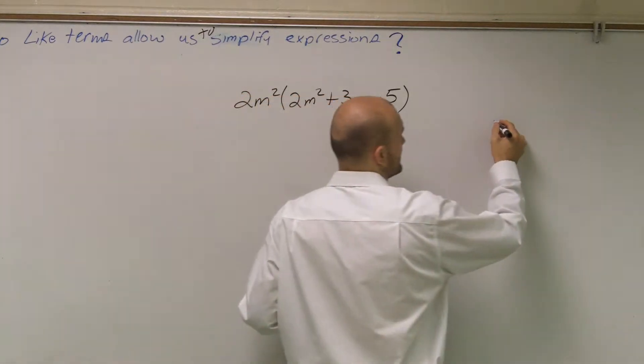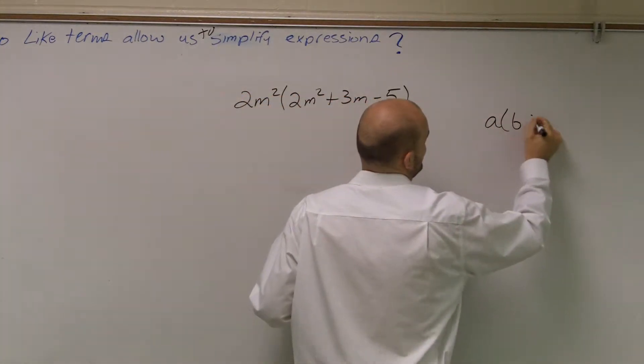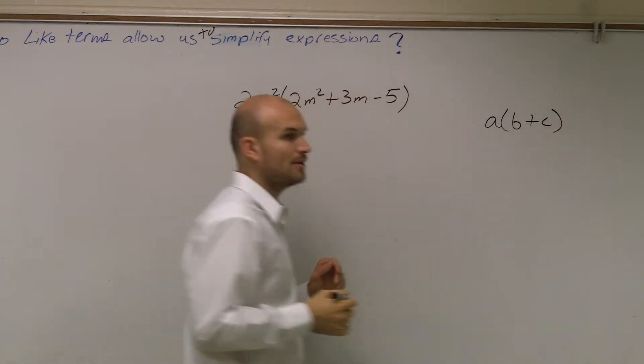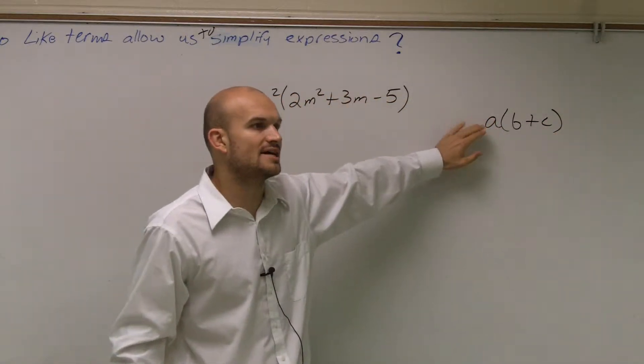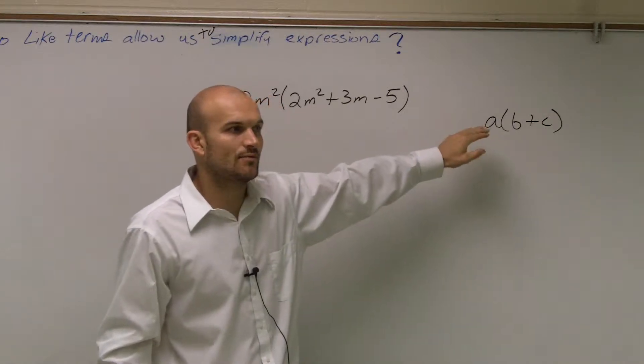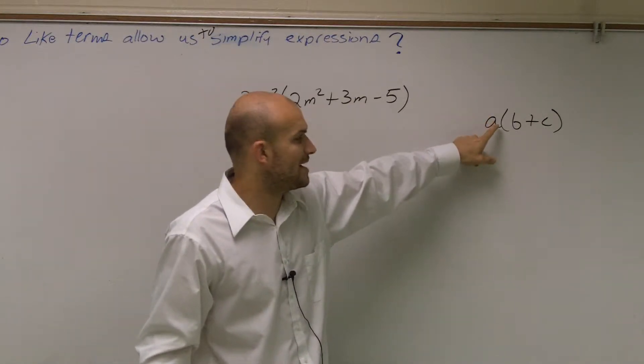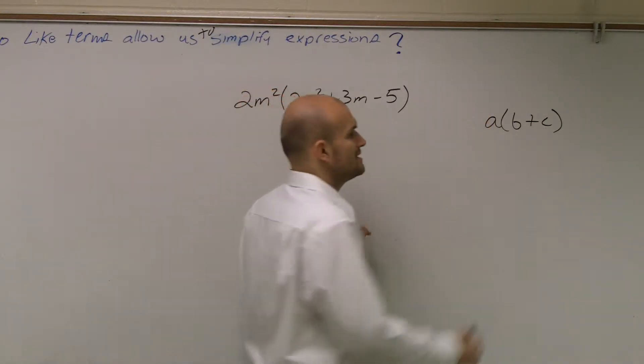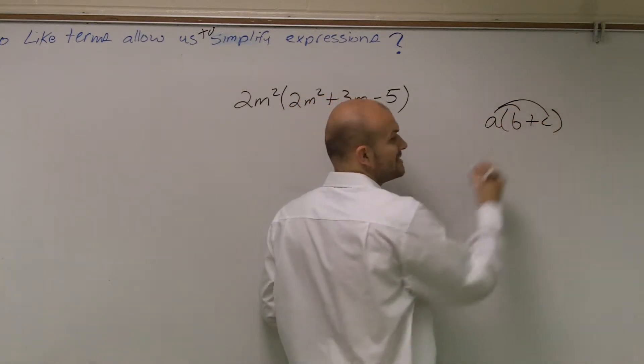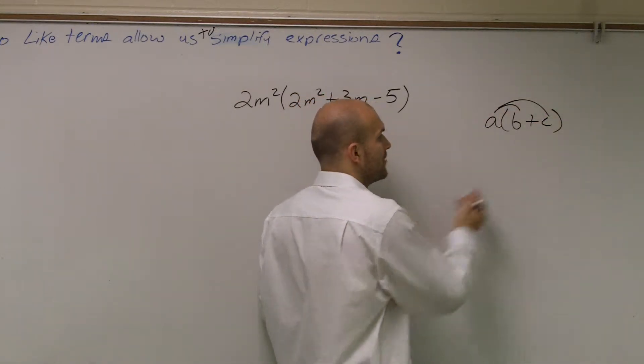So the main important thing we need to remember about the distributive property is when we have a number or a variable outside of a parentheses, what that means is we need to multiply that number or variable to every single term inside our parentheses.